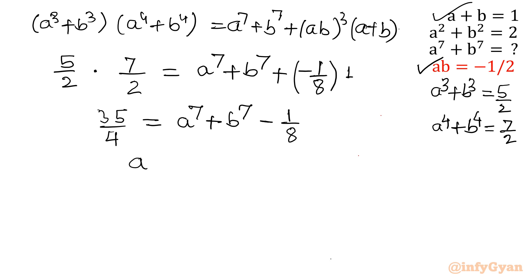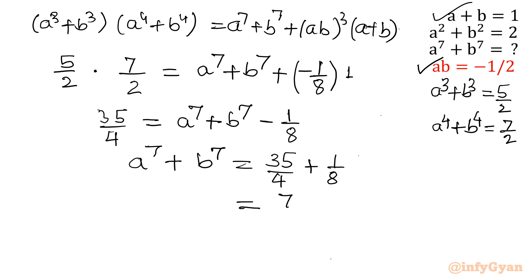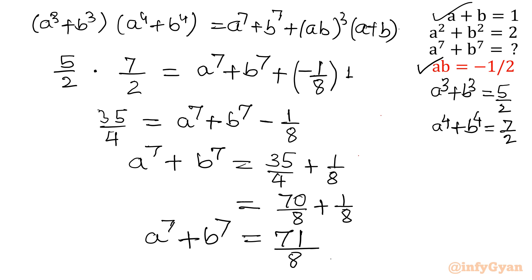Taking −1/8 to the left side: a⁷+b⁷ = 35/4 + 1/8. Making a common denominator: 70/8 + 1/8 = 71/8. So our answer is 71/8. This is how we solve a system of equations and calculate any expression. I hope you like this video — don't forget to subscribe, and the next video will be on algebraic manipulation from the mathematics olympiad. Thank you so much.